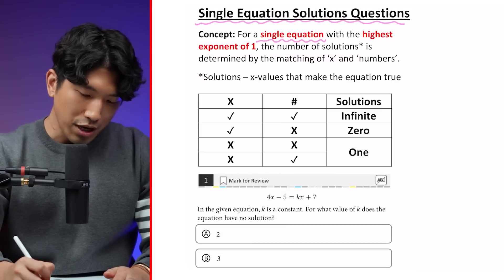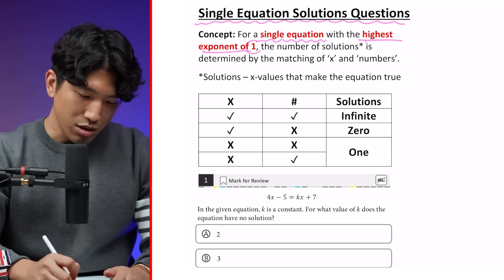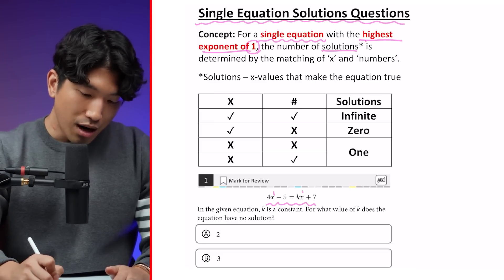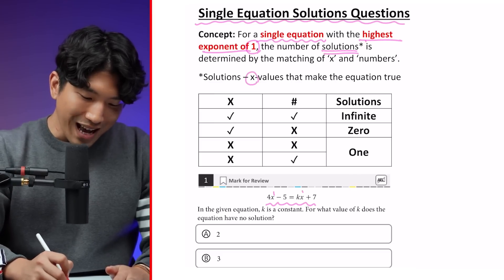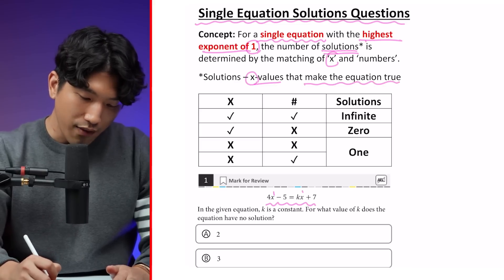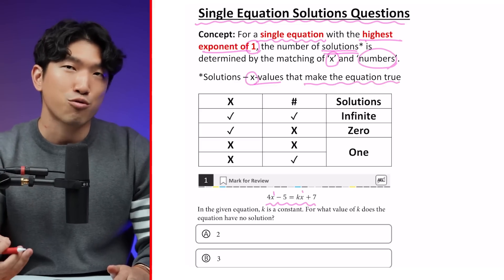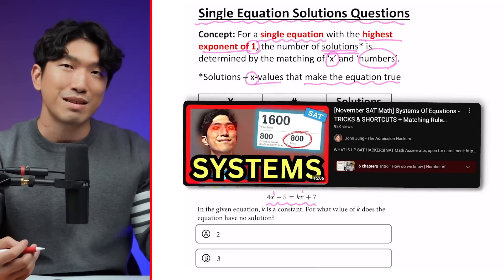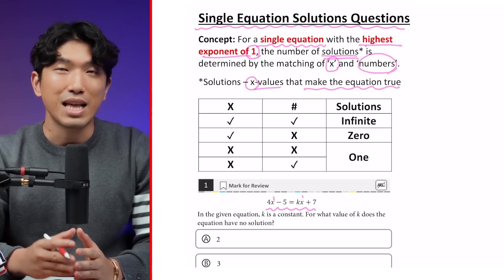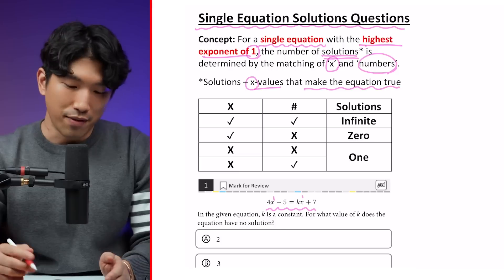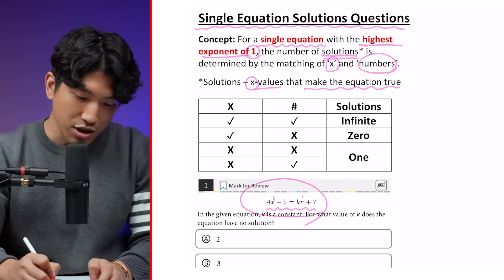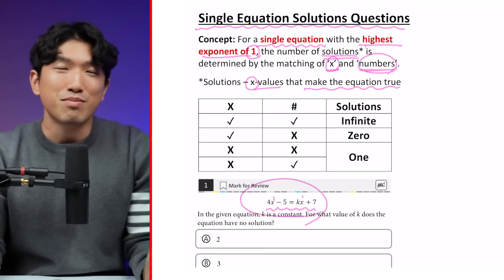Whenever you're working with a single equation and the highest exponent is going to be one, the number of solutions — the number of x values that make the equation true — is determined by matching the x's and the numbers. We call this the matching rule, which we also covered in the systems of equations video. If you have a single equation, you use just the x and number portion of the matching rule.